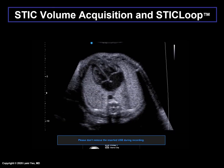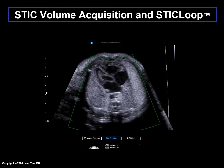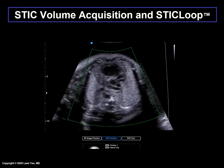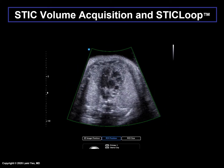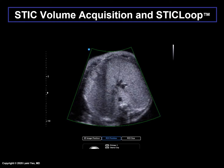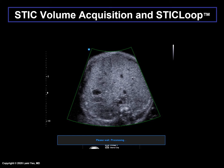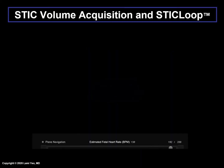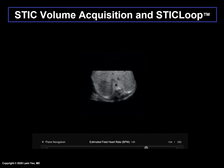Here is an example of an actual STIC volume acquisition and its automatic conversion to STICLOOP. Notice that the transducer is tilted slightly to ensure that the transverse aortic arch or dolphin is clearly visible. During the STIC volume acquisition, it sweeps from the upper mediastinum through the four-chamber view and then down to the fetal stomach. There are some fetal movements evident at the level of the four-chamber view. After acquisition is completed, the system automatically converts the STIC volume into STICLOOP. However, in the STICLOOP, one can easily see fetal motion artifact in the area between the four-chamber view and the fetal abdomen.